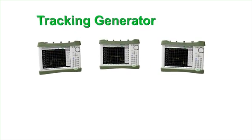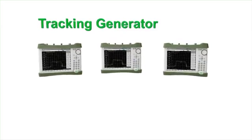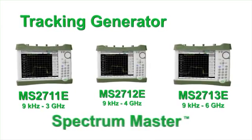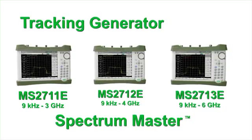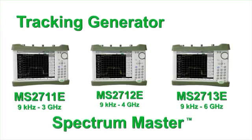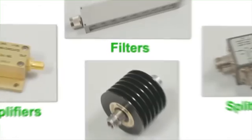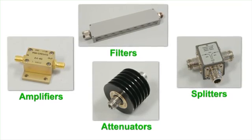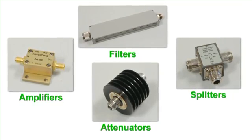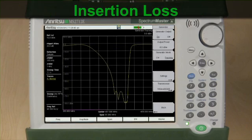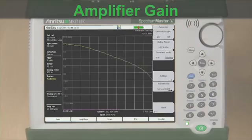Anritsu's tracking generator capability is an available option on the Anritsu E-Series line of Spectrum Master Spectrum Analyzers. The tracking generator helps you characterize the behavior of components and electronic devices, such as amplifiers, filters, splitters, and attenuators, depicting electrical characteristics such as frequency response, insertion loss, and amplifier gain.